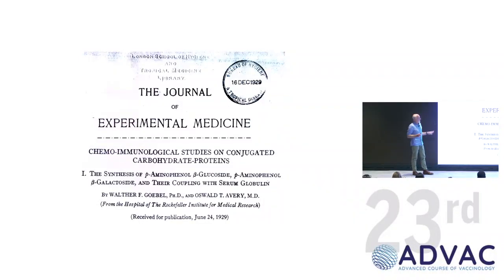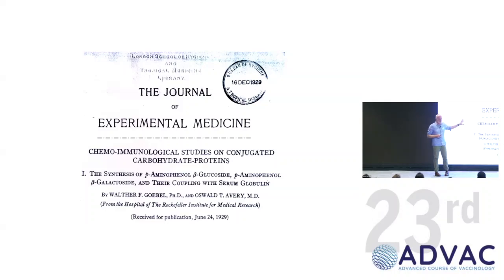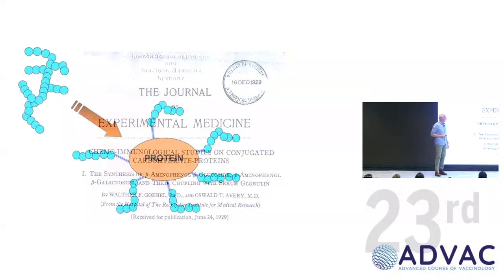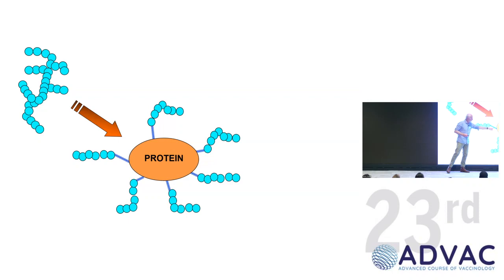Like many things in science, people discovered this way before they exploited it. It was in the 1920s that they realized that if you took a synthetic sugar and conjugated it to a serum globulin — a protein — you could make these synthetic molecules immunogenic in rabbits. That's the basis for conjugate vaccines. If you take a polysaccharide, either full length or cut into small pieces, and attach it chemically onto a protein carrier, this is what a conjugate vaccine essentially is.